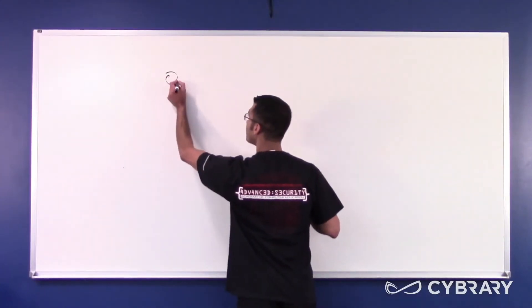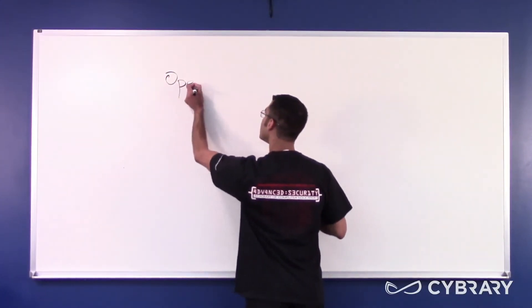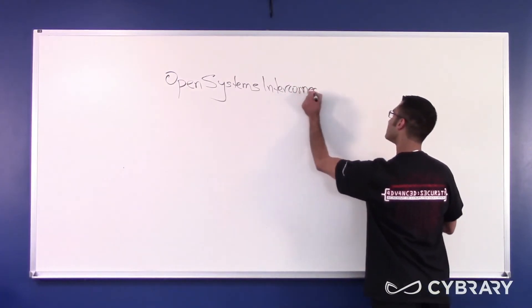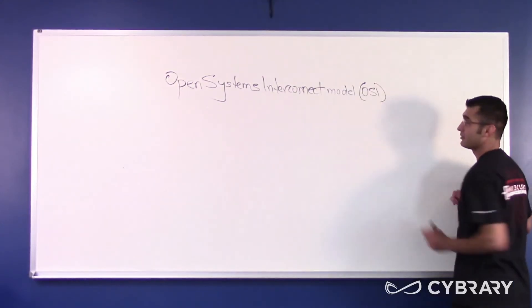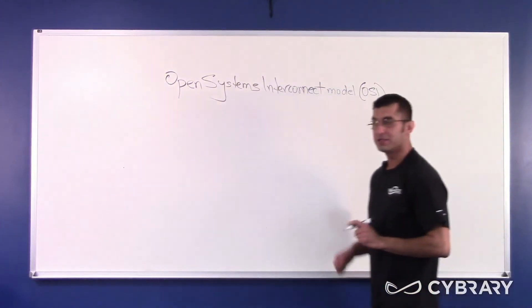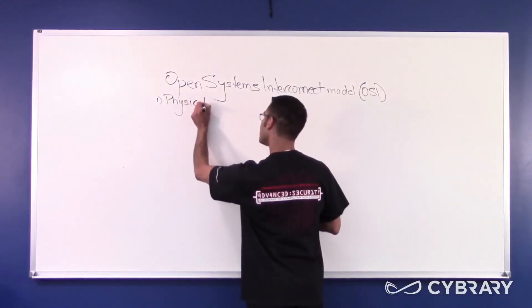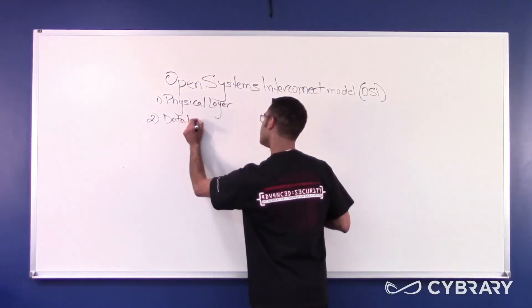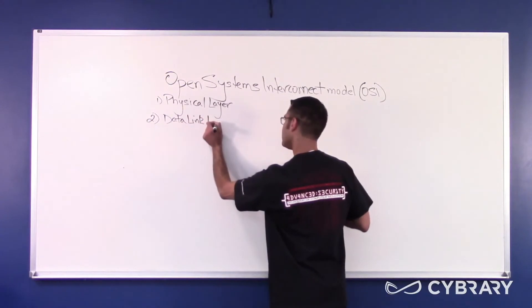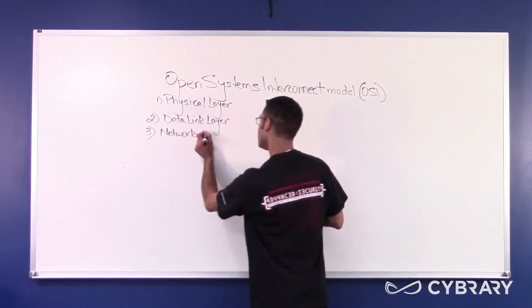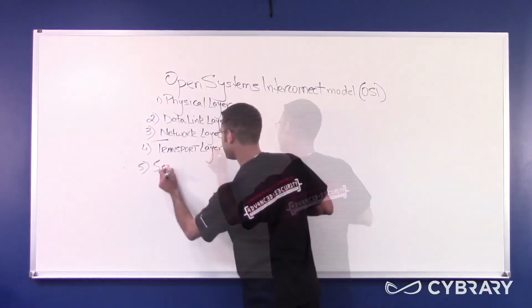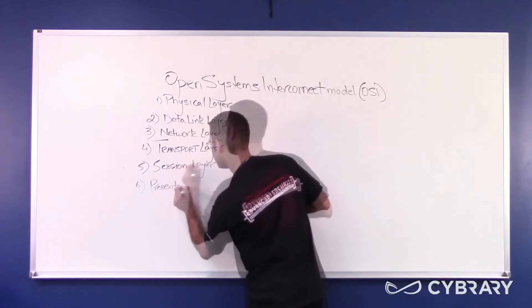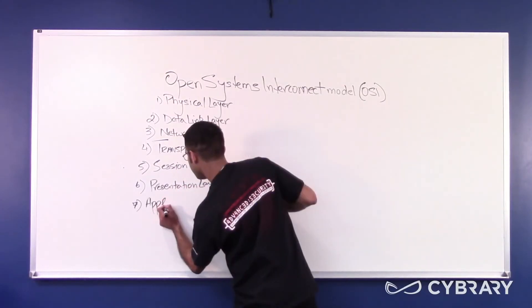So, let's write down the layers included in the OSI model. Open Systems Interconnect Model or the OSI Model. Now, the OSI Model is made up of seven layers. Layer 1 is your physical layer. Layer 2 is your data link layer. Layer 3 is your network layer. Layer 4 is your transport layer. 5 is your session. 6 is your presentation. And 7 is your application layer.